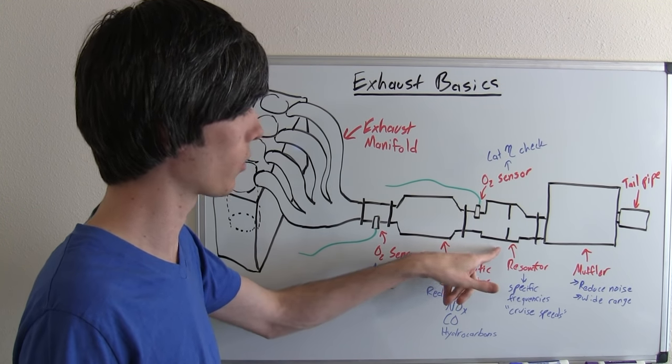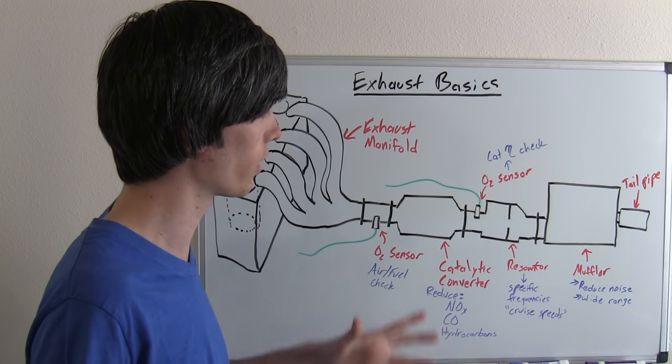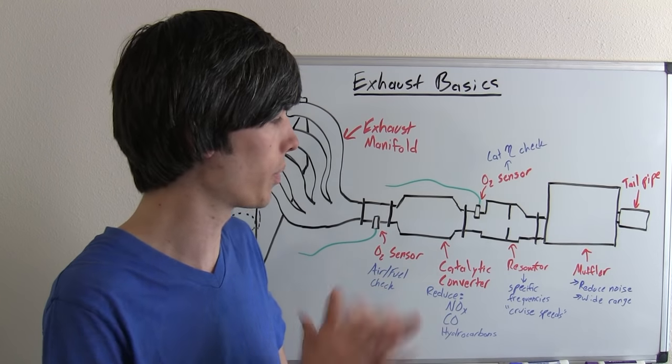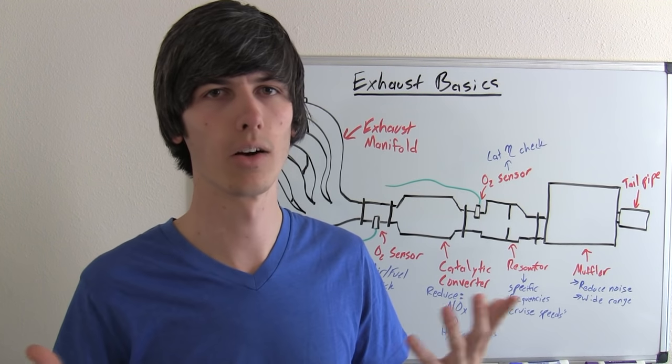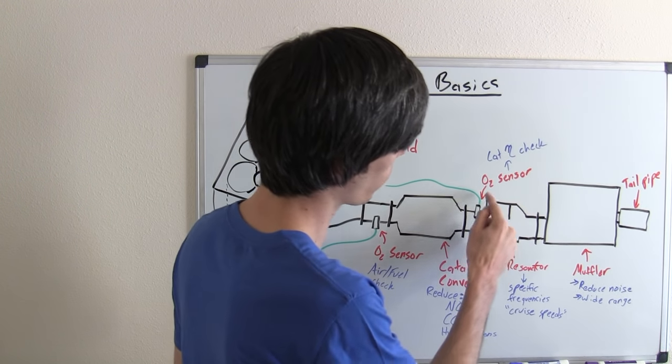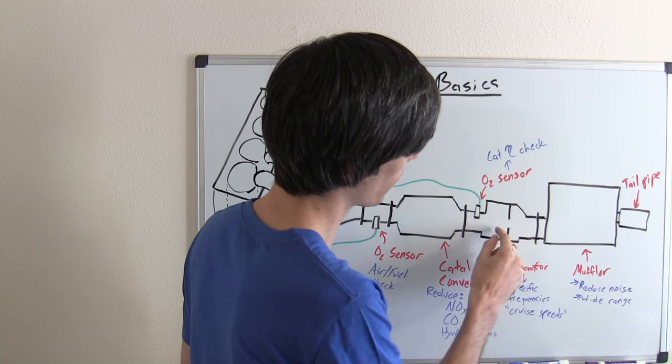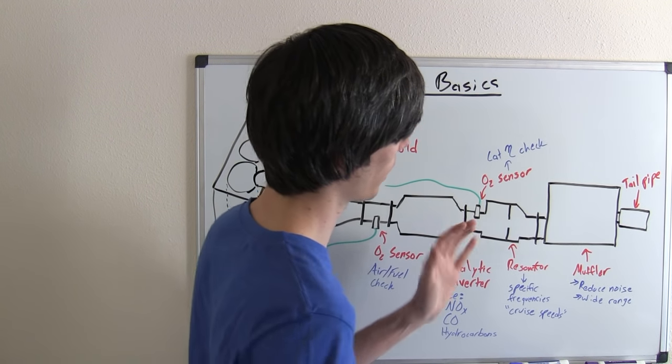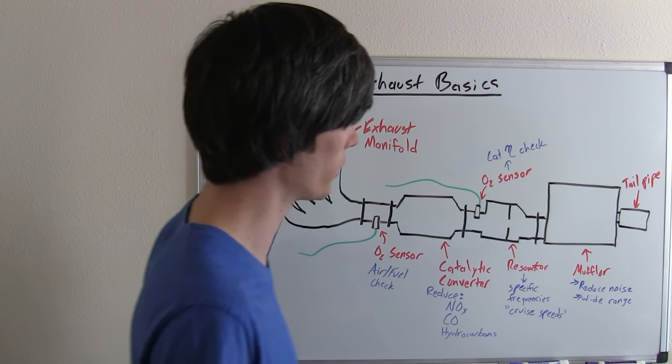Next up is a resonator. Not all vehicles have a resonator. Basically, these are used to drown out kind of specific RPM ranges, kind of like cruise speeds. You don't want to just be on the highway with this really loud noise. What this does is you've got your wavelengths of sound coming in here, and that'll break it up. As they bounce back, they'll bounce back and cancel each other out for specific ranges.